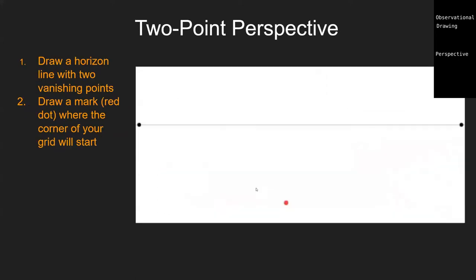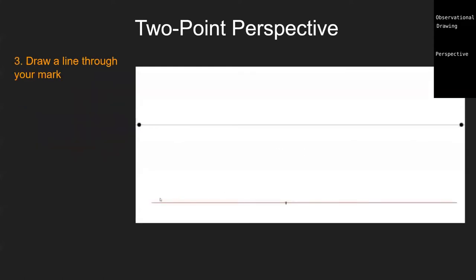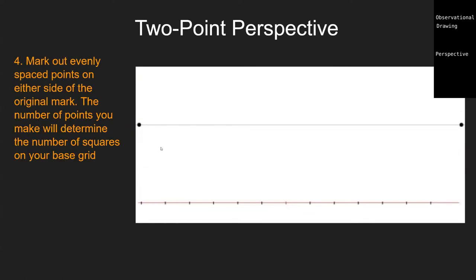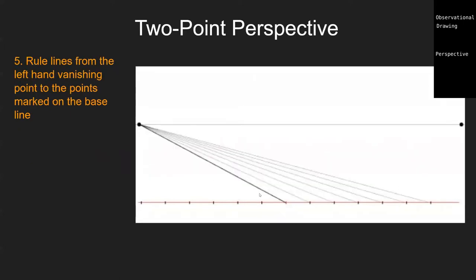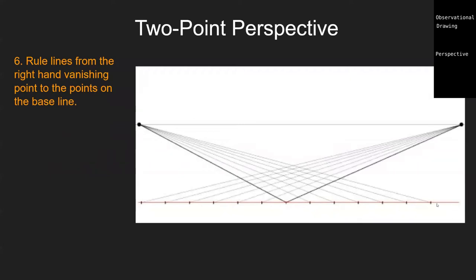In two-point perspective, we still have a horizon line with a starting point, but now we have two vanishing points. The setup is similar but we're overlapping and using both perspective grids. Again we get this floating grid, and we can draw shapes and place them anywhere vertically. This works for both one-point and two-point perspective.